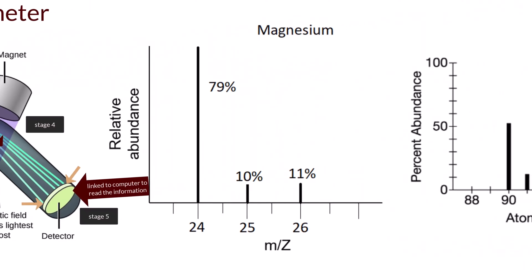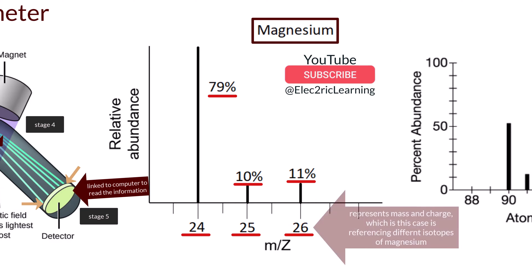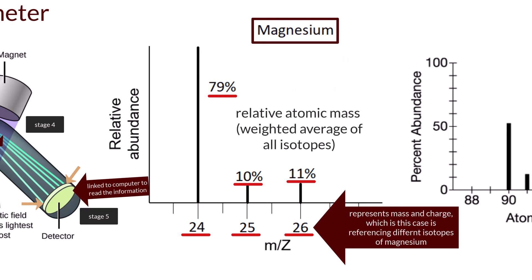This graph is showing the mass spec output for a sample of magnesium. This shows that 79% relative abundance of magnesium atoms captured had a mass-to-charge ratio of 24, 10% at 25, and 11% at 26. Each of these values corresponds to an isotope of magnesium and gives the relative percentage. This information can then be used to calculate the average atomic mass of this element, which we learned how to do in the last video.